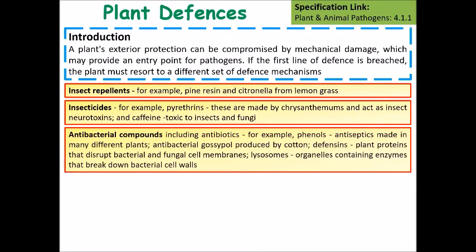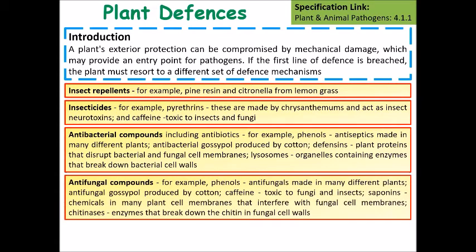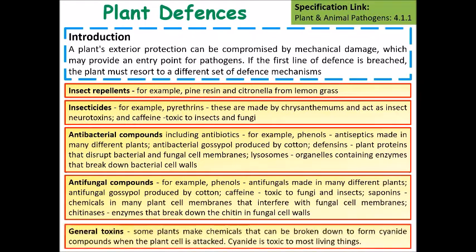Plants can produce antibacterial compounds including antibiotics, which disrupt the life cycle of bacteria — quite often damaging their cell membranes and enzymes. They can also produce antifungal compounds that specifically target fungi outside of the plant cells. Finally, general toxins such as cyanide can be produced, which are toxic to most living things.